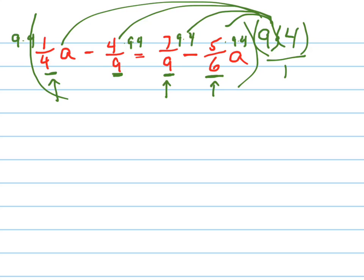And now, watch what happens. I'll change my color. The 4's cancel out. And this is just now 9a. These 9's cancel out. So just 4. And that's just 4 times 4, which is 16.